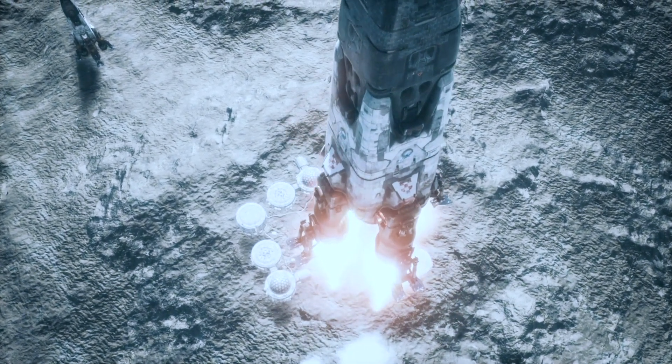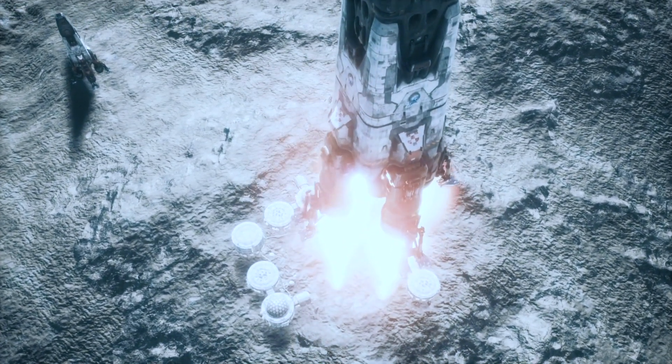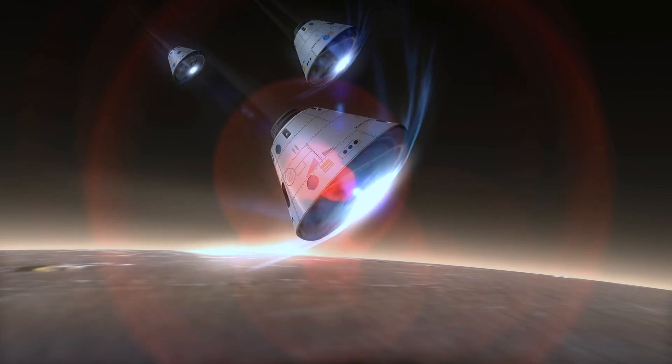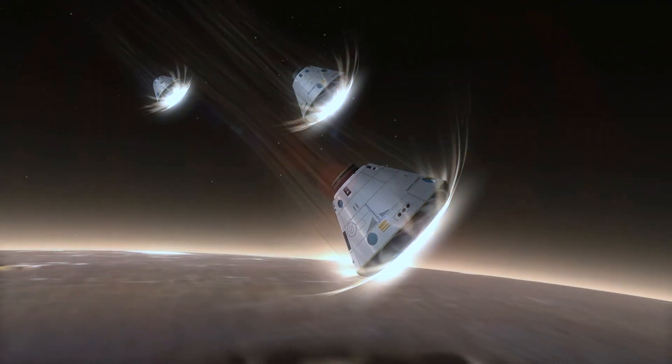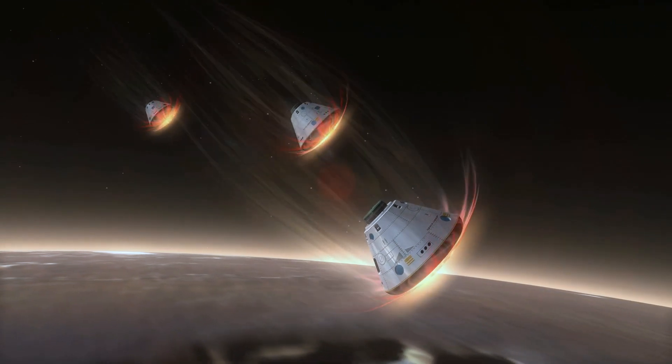The lack of a protective atmosphere on the moon leaves its inhabitants vulnerable to the constant bombardment of cosmic radiation and the threat of meteorite impacts. Developing robust shielding materials and structures capable of withstanding these hazards will be crucial for ensuring the safety and well-being of lunar colonists.